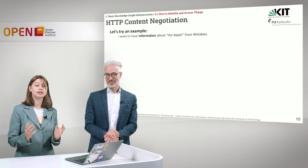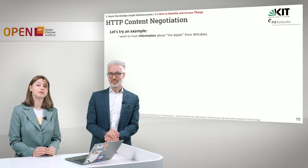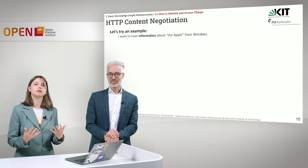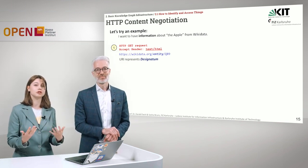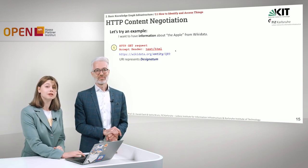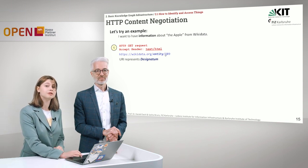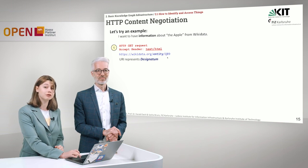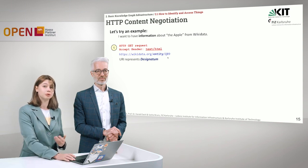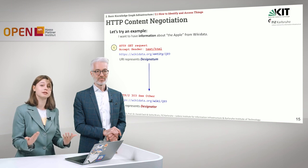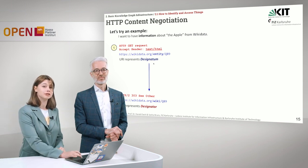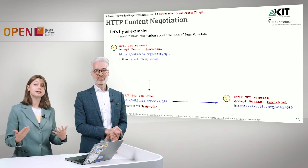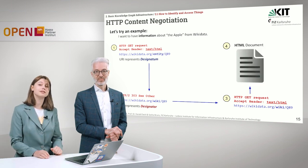Let's take a look at an example. Let's say we would like to have information about the apple from Wikidata in human-readable form, so we need an HTML file. We contact the server via HTTP request and say: given this resource — our apple Q89 — we would like to have information about it in HTML. This URI is called the designatum. The web server receives the request, searches for the URI in the requested format, and the resulting URI is called the designator. The server returns the response with the required URI as an HTML document.